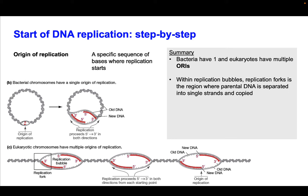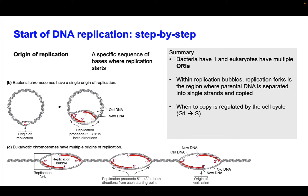When these replication bubbles form, there's an area called the replication fork. The replication fork is an area where the parental DNA is separated into single strands and enzymes assemble for this region to be copied. In eukaryotes, and really in bacteria, this process is highly regulated.